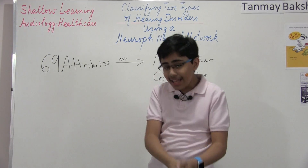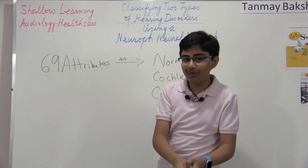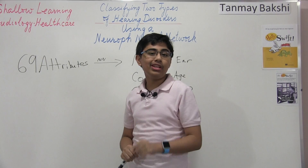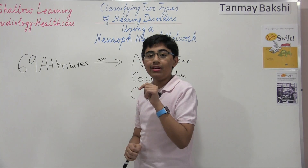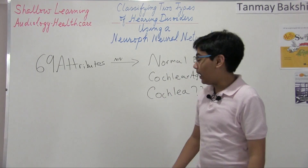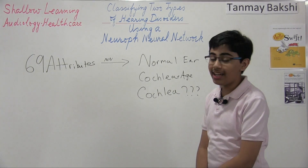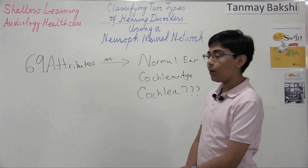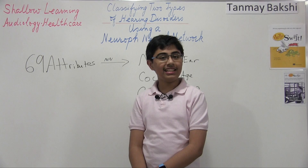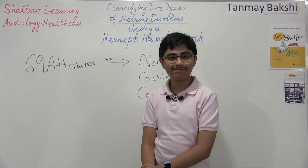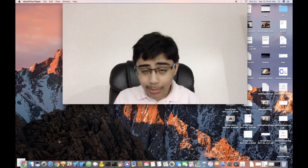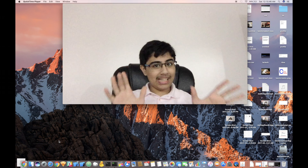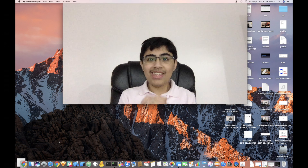Without any further ado, I'm going to go over to the code part now, where I'm going to show you exactly how you can implement this neural network. We're going to be reaching around 98.9% accuracy on this dataset. So let's get to the code part now.